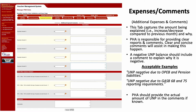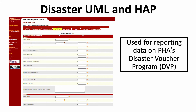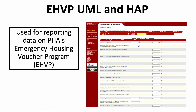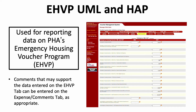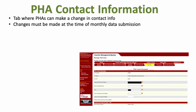The Disaster UML and HAP tab is for reporting on the PHA's Disaster Voucher Program. The EHVP UML and HAP tab is used for reporting data related to the PHA's Emergency Housing Voucher Program. Lastly, the PHA Contact Information tab is where a PHA reports any changes in contact information.